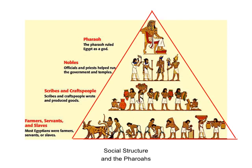I did draw a pyramid around the edges of this social structure, and that is really symbolic of Egypt and many other civilizations we're talking about. Always at the bottom of the pyramid there are a lot more people, much like there are more bricks at the bottom, and it works its way up to fewer and fewer people towards the top.